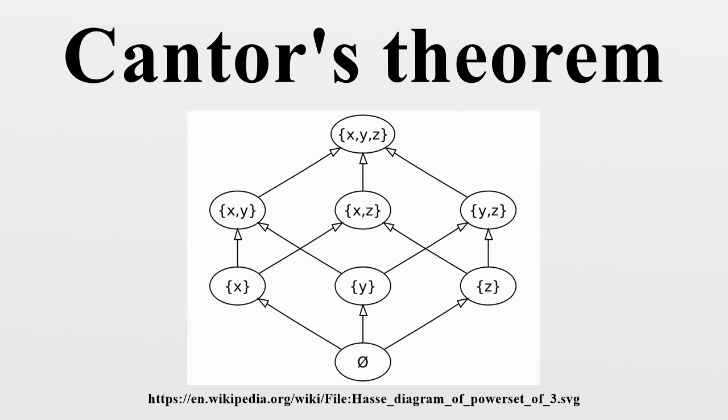X ∈ B if and only if X ∉ F(x), for all X the sets B and F(x) cannot be the same because B was constructed from elements of A whose images did not include themselves.